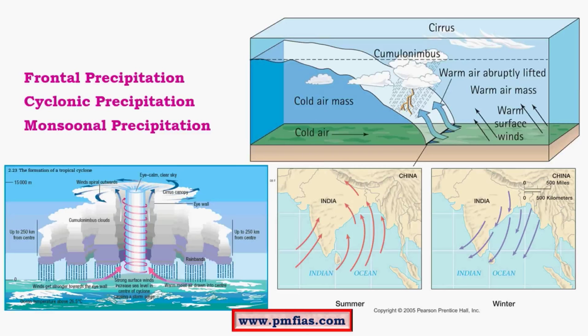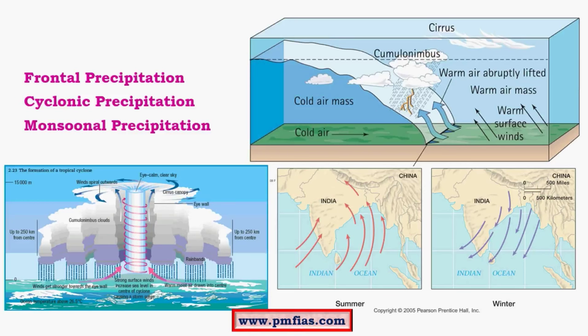Other than convectional and orographic precipitation, we have frontal, cyclonic, and monsoonal precipitation. Frontal precipitation involves cold front, warm front, stationary front, and occluded front, all associated with cloud formation and rainfall. Cyclonic precipitation will be studied in detail with tropical cyclones. Monsoonal precipitation involves two kinds of monsoons acting on India — south-west monsoons and north-east monsoons. The south-west monsoons bring rainfall to the whole of India, while north-east monsoons bring rainfall particularly to the Andhra and Tamil Nadu coast. These will be studied in detail when studying about Indian monsoons, including factors like jet streams and large-scale convection cells.